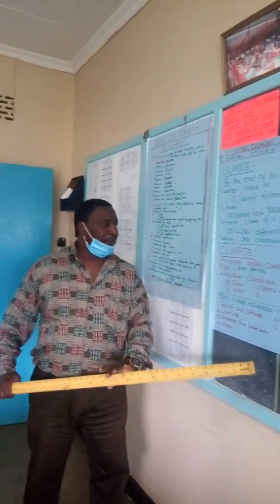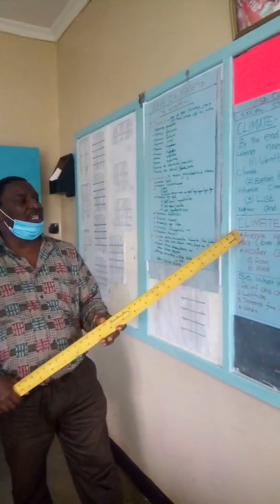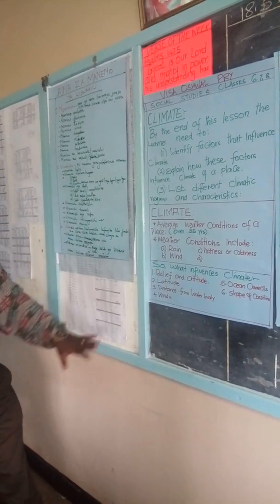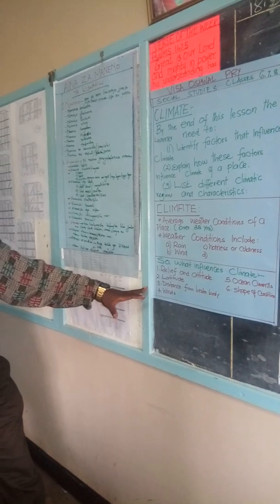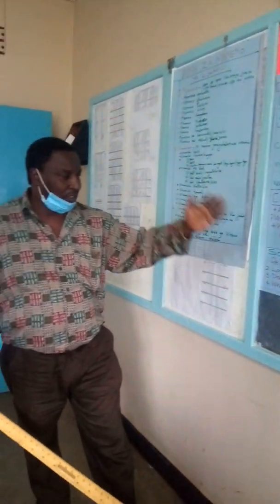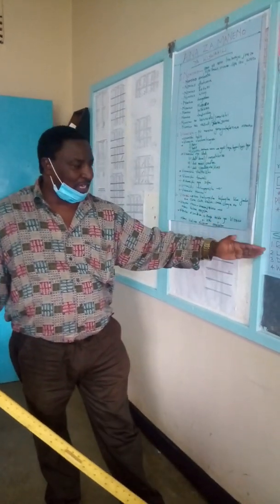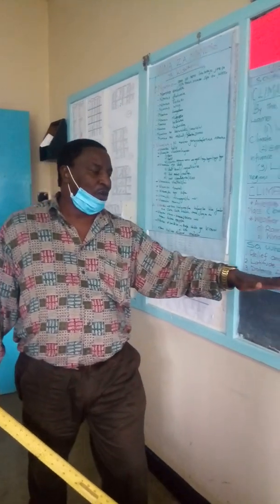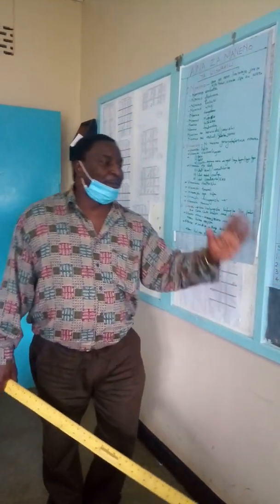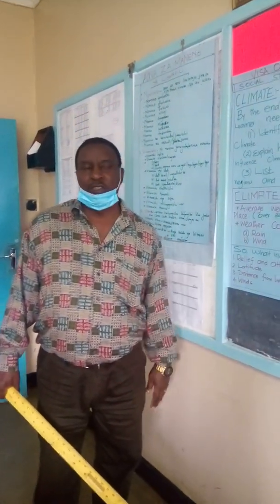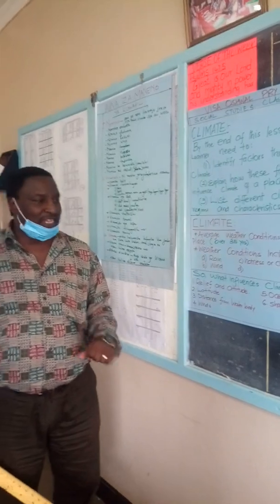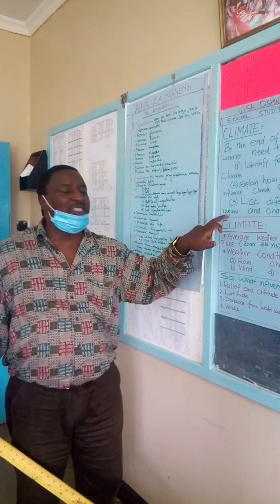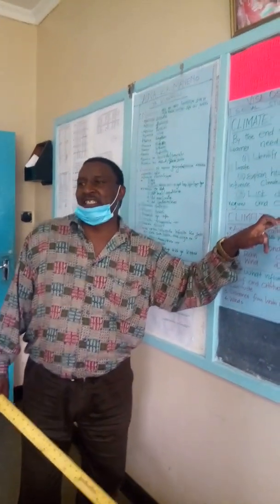To conclude, we began by describing what climate is — the average weather conditions of a place. We then covered the factors that influence climate: relief and altitude, latitude (distance from the equator), distance from water bodies, winds, ocean currents, and the shape of the coastline. The next time we meet, we will be listing different climatic regions and their characteristics. Thank you very much.